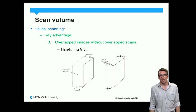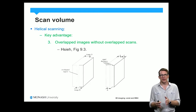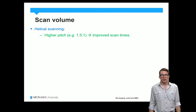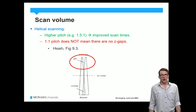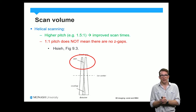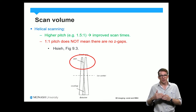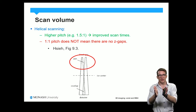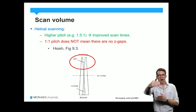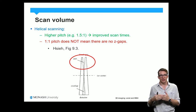Another advantage is that we can reproduce overlapping images without actually overlapping the scan, just by going back and selecting the data in the way that we require. One thing to note is that even if we have a pitch of one, it does not mean that there are no gaps in Z. Because of the divergent nature of the beam, as we move from the source towards the detector we have this degree of divergence, which means we therefore have overlap towards the detector surface and gaps towards the source.